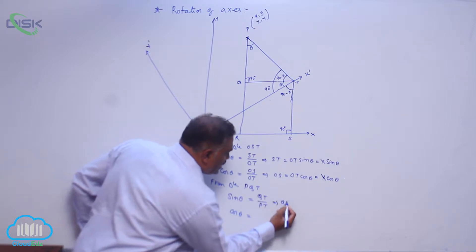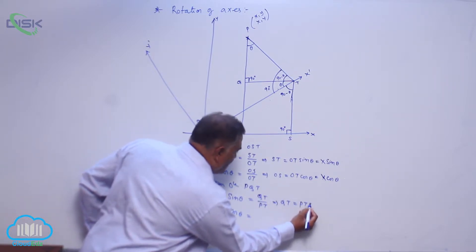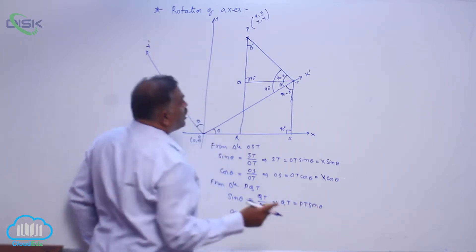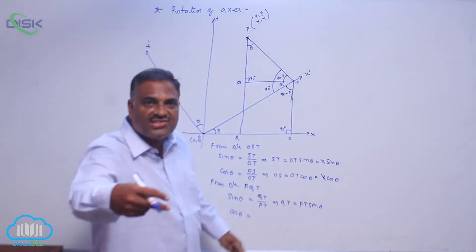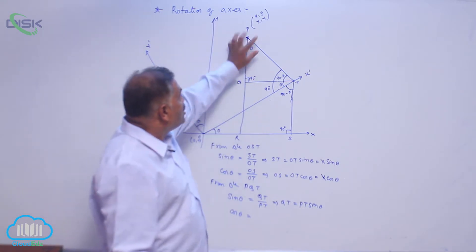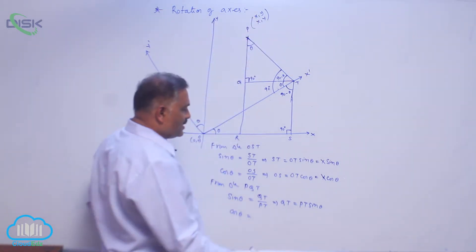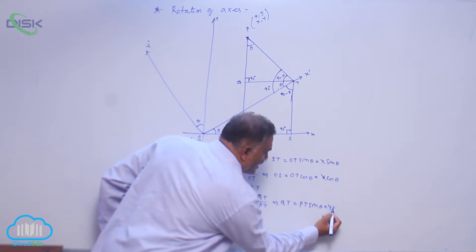You can see very clearly PT is the new vertical distance referring to new Y coordinate of the point P, that is Y sin theta.